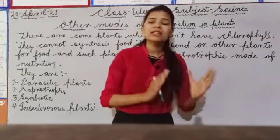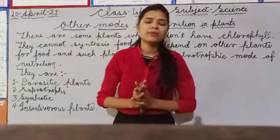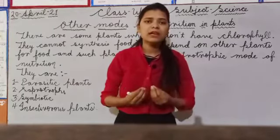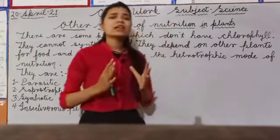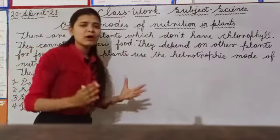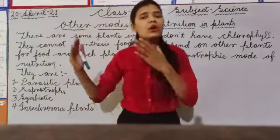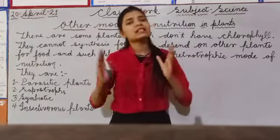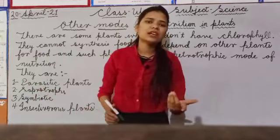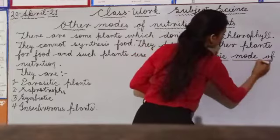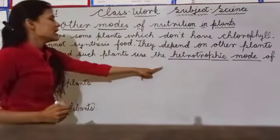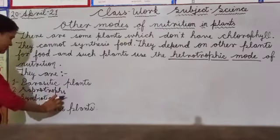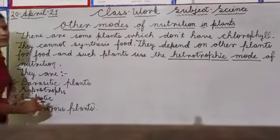When we discuss autotrophic and heterotrophic nutrition, in heterotrophic nutrition plants depend on other plants. So they follow heterotrophic mode of nutrition. There are four types: parasitic plants, saprotrophs, symbiotic plants, and insectivorous plants.